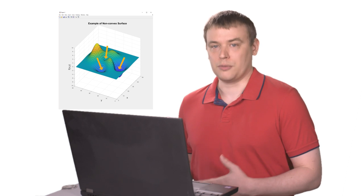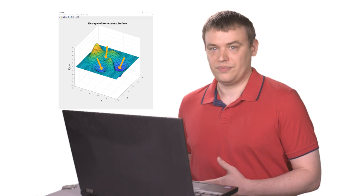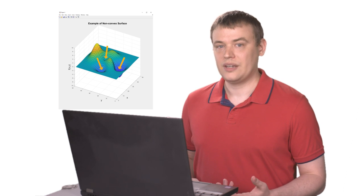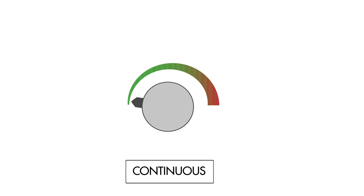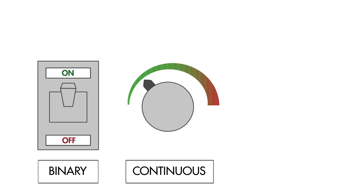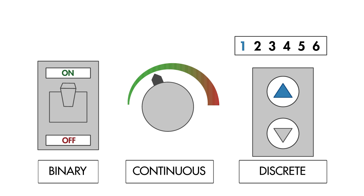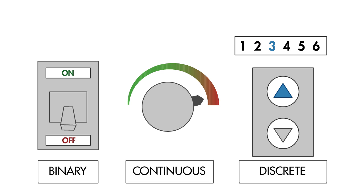So we know we have hyperparameters, and we know we want to tweak them. But how do we do that? Some hyperparameters are continuous, some are binary, and others might take on any number of discrete values. This makes for a tough optimization problem. It is almost always impossible to run an exhaustive search of the hyperparameter space since it takes too long.